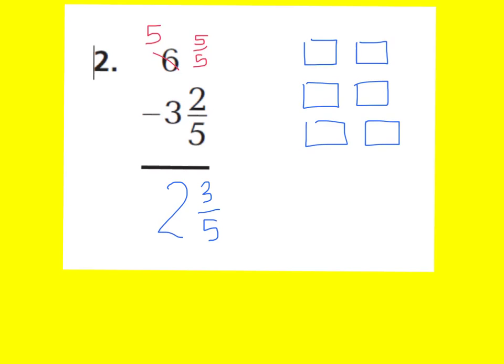The model would look something like this. I would start with 6 wholes and I cannot take away 3 and 2 fifths yet. I can take away 3 wholes, but it's going to be hard to take away 2 fifths until I make 5 fifths to take away. So I'm going to take this whole right here and just make it 5 fifths. Now I can take away 2 fifths — 1 fifth, 2 fifths. And you can see that my answer would be what's left over: 2 wholes and 3 fifths.